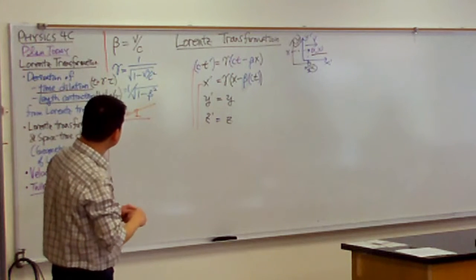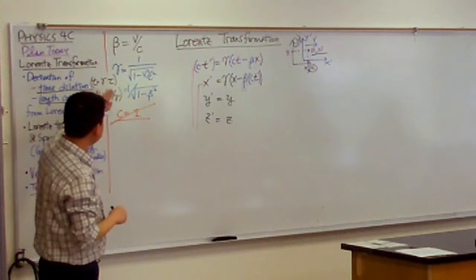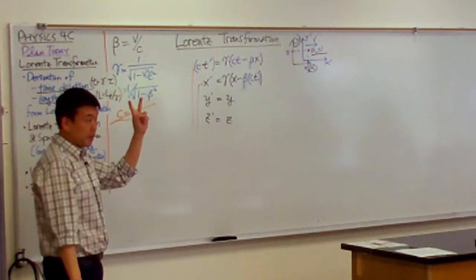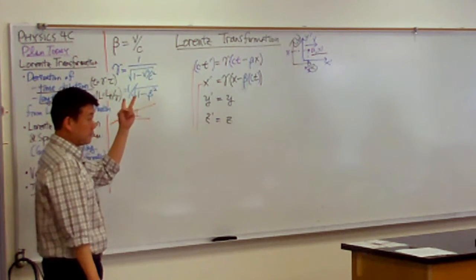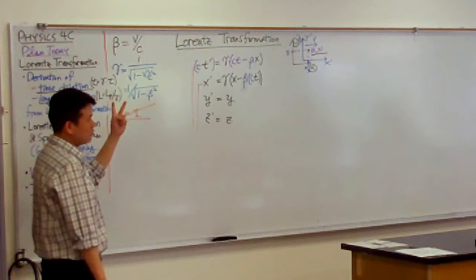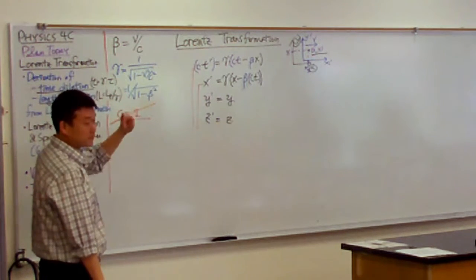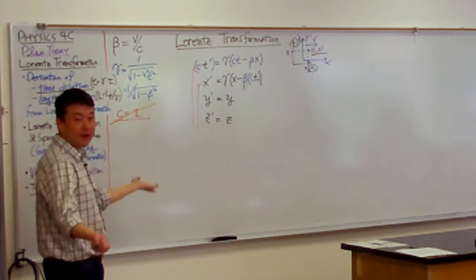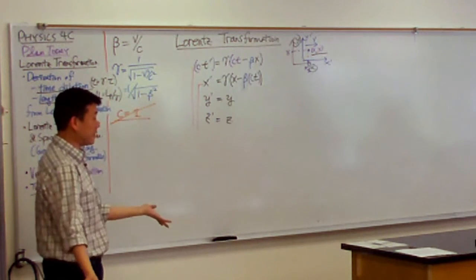We derived these two last time from the two postulates of special relativity — mostly the second postulate, that the speed of light is constant.